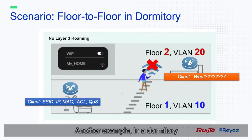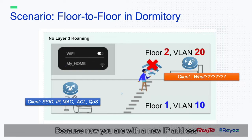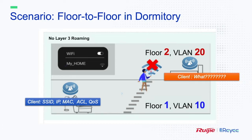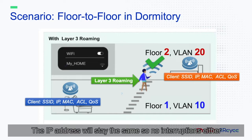Another example: in a dormitory, if you go from one floor to another, interruptions happen because you now have a new IP address. With the layer 3 roaming feature, the IP address will stay the same, so no interruptions either.